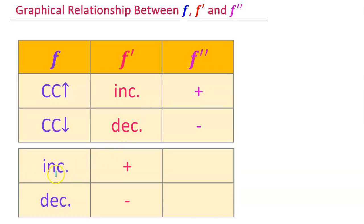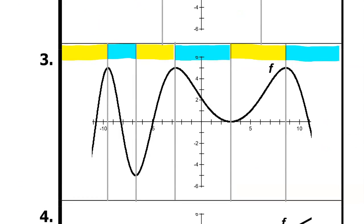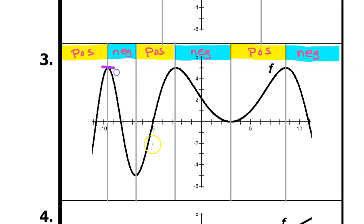Remember, wherever function f is increasing, f prime is positive. Where it's decreasing, f prime is negative. So f prime should be positive in the increasing intervals and negative in the decreasing intervals. Don't forget about the horizontal tangent lines — scan for those. We have horizontal tangent lines here, here, here, here, here, and here.